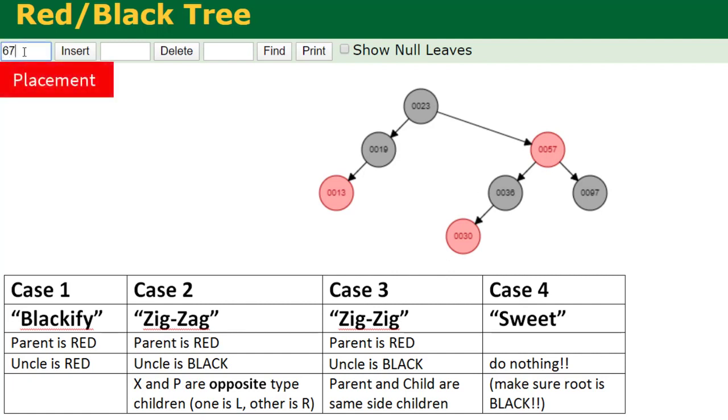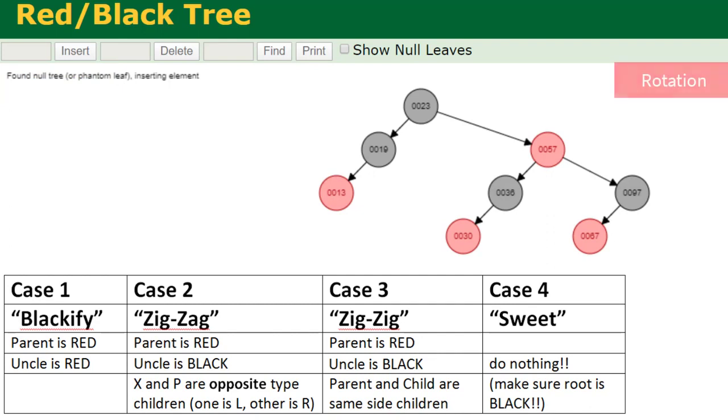Our last number is 67. Let's hope this goes in without any issue. That's going to be greater than 57, less than 97, and put in the 67 there. We don't have any reds in a row. That was the last number in our example.